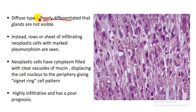The diffuse type is poorly differentiated and glands are not visible. This is because the diffuse type is associated with E-cadherin mutation — E-cadherin helps in adhesion of cells. Due to the defect, cells are not adherent and do not differentiate into glands; instead, the cells are arranged in rows or sheets.